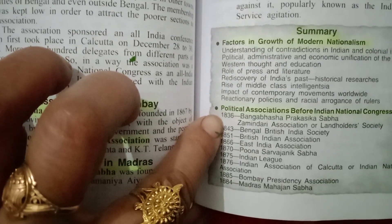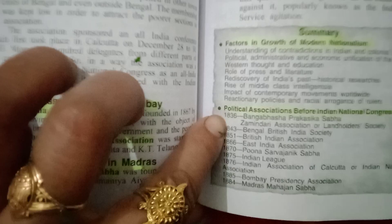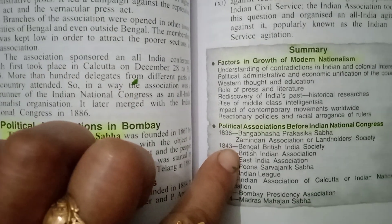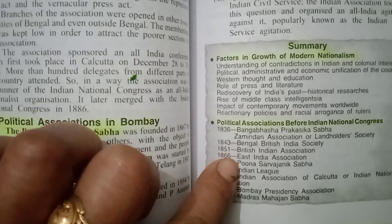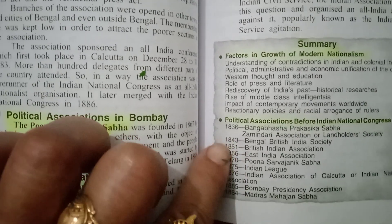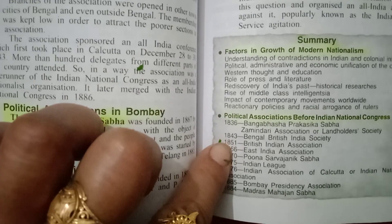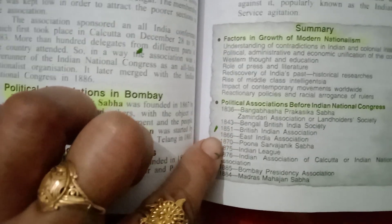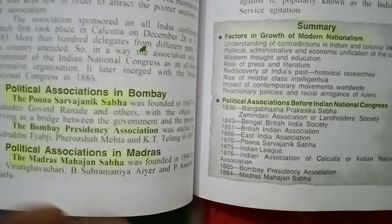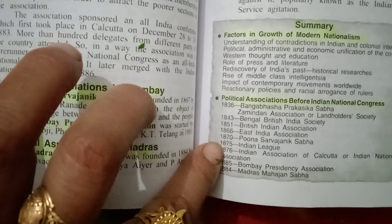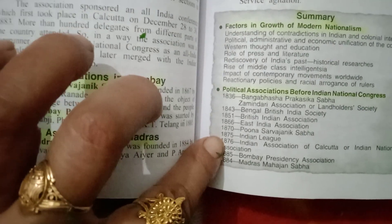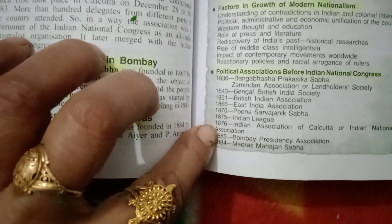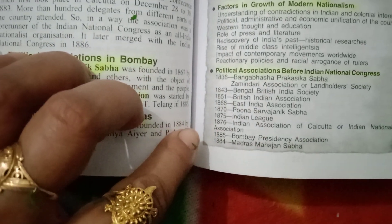1836: Bangabhasha Prakashika Sabha, Zamindari's Association or Landholders' Society. 1843: Bengal British India Society. 1851: British Indian Association. 1866: East India Association. 1870: Poona Sarvajanik Sabha. 1875: Indian League. 1876: Indian Association of Calcutta and Indian National Association.